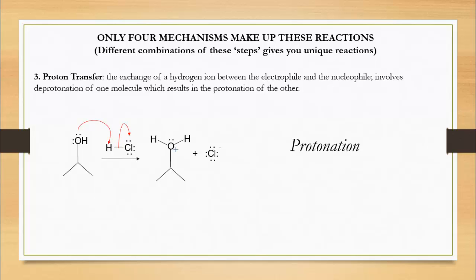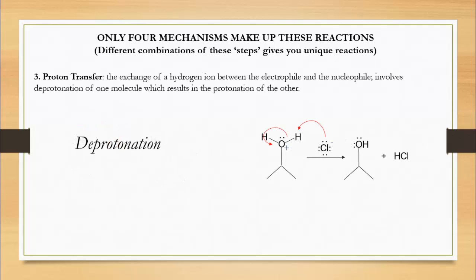Here's a proton transfer between hydrochloric acid and an alcohol. Hydrochloric acid is deprotonated, and donates a hydrogen ion to the alcohol, which is protonated, resulting in a positive charge on oxygen, who now has three bonds, and a negative charge on the chlorine, who now carries extra electron density.